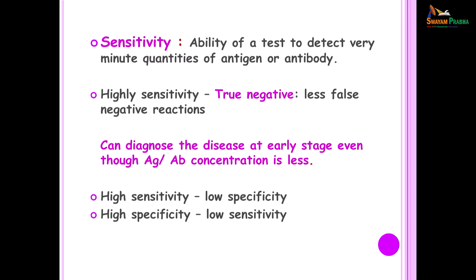Sensitivity is the ability of a test to detect very minute quantities of either antigen or antibody. Highly sensitive tests are those which show true negatives, so there are fewer false negatives — they can diagnose the disease at an early stage even though the quantity of antigen or antibody may be less. Usually a highly sensitive test shows low specificity, and a high specificity test shows low sensitivity.